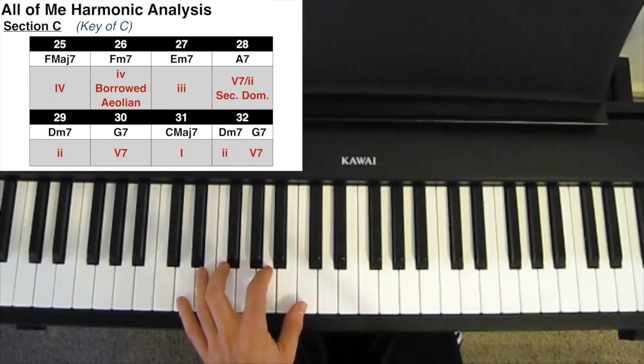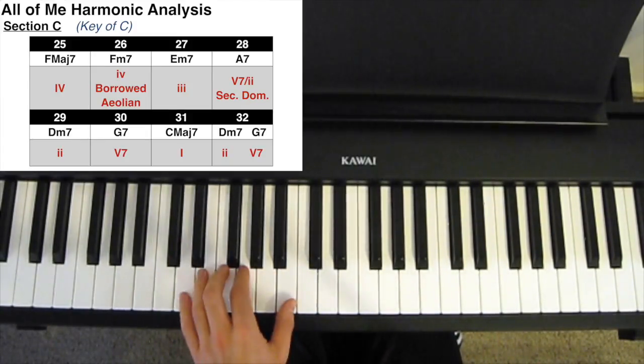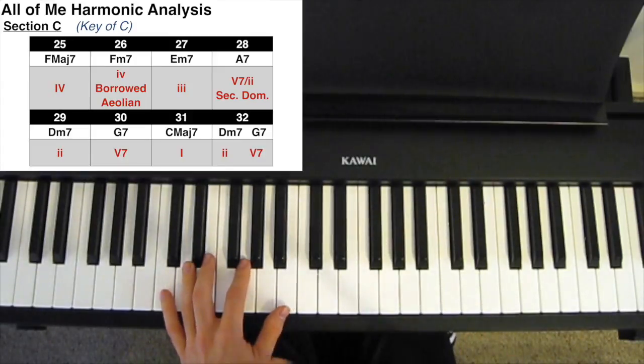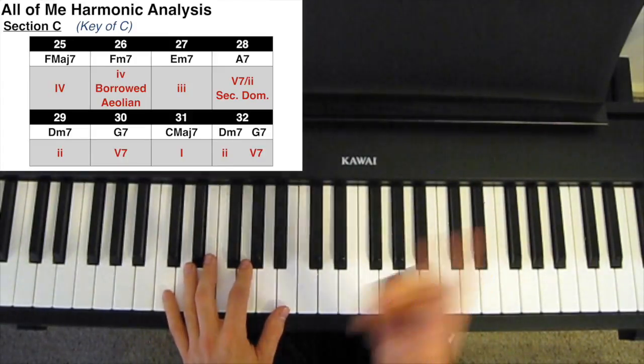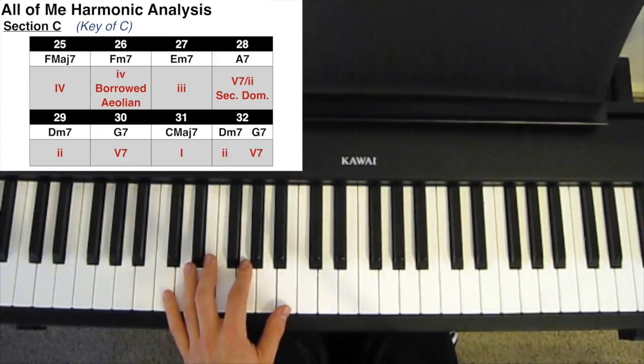We play a little turnaround, with just a 2-5, the D minor 7 to the G7, to get us back into the first A section on our next go-round.